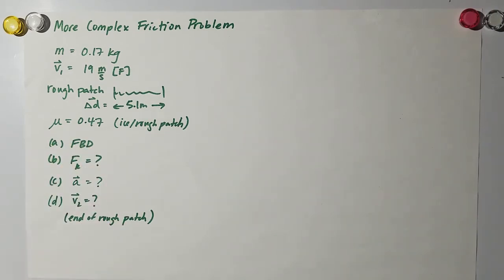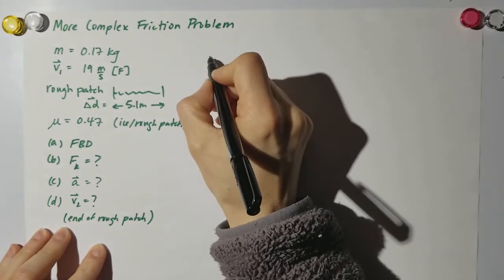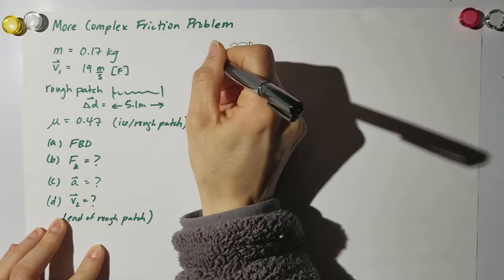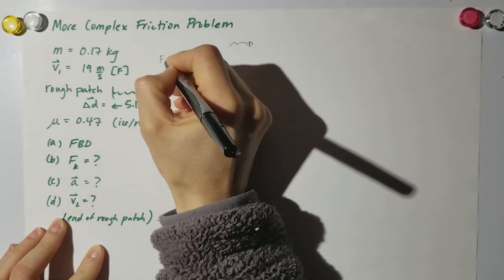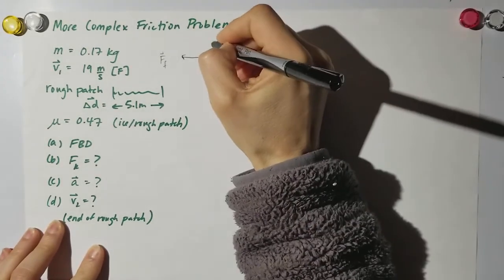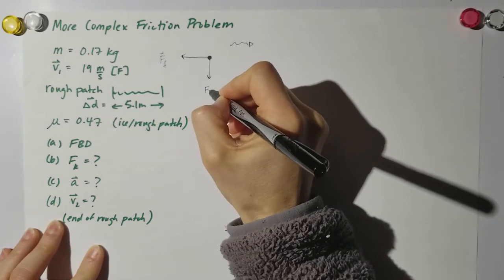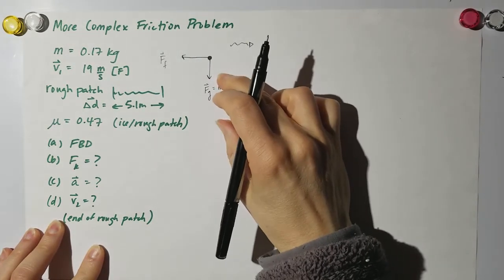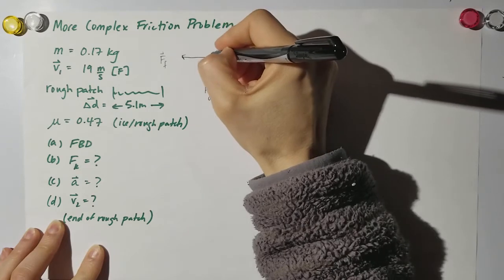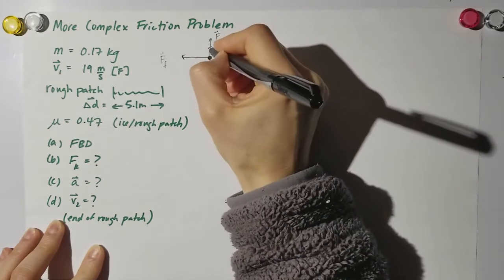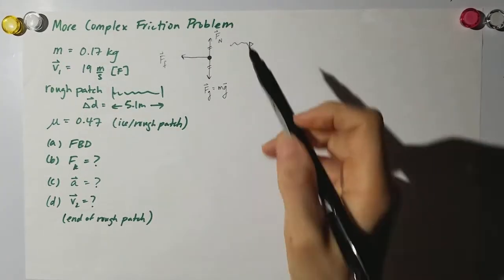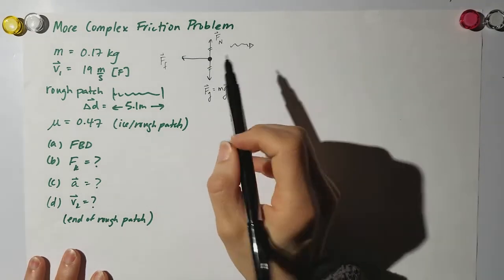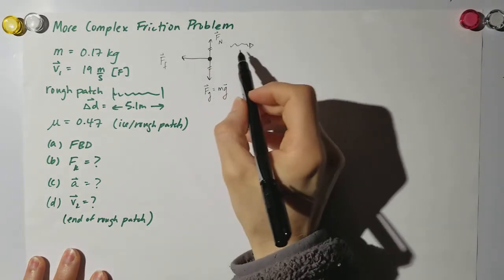So the first thing we want to do is draw a free body diagram. Here's my dot which is my puck. Now let's say it's moving forward in this direction, so friction will act on it in this direction. We don't know how much friction there is, but I do know that there is a force of gravity which is mass times acceleration due to gravity, it's down. Now if I left it like this it looks like it's falling down and going this direction. Don't forget about the normal force, and these are equal so it's balanced vertically but it's not balanced horizontally.